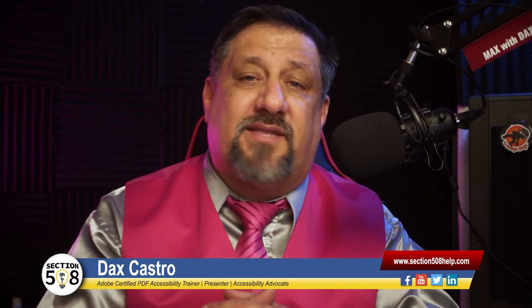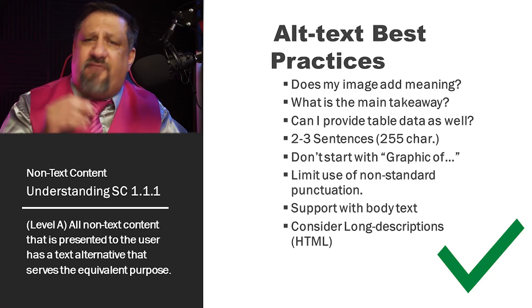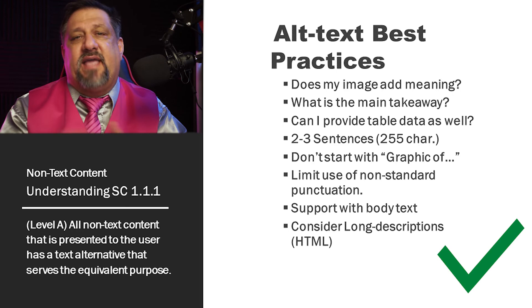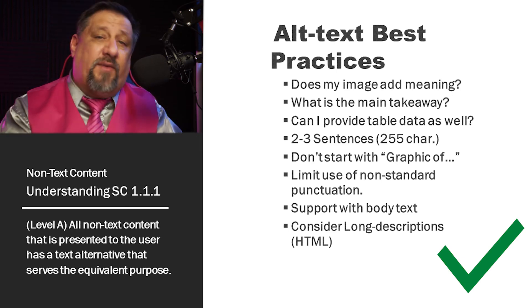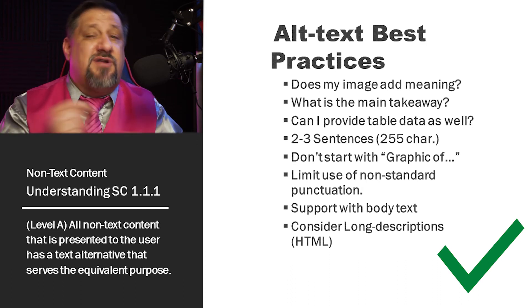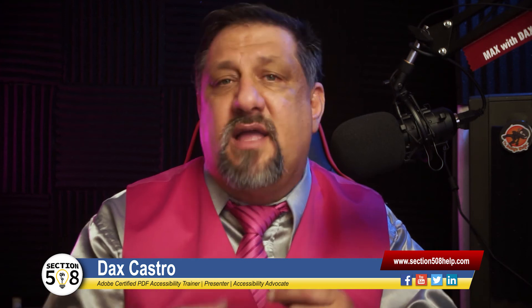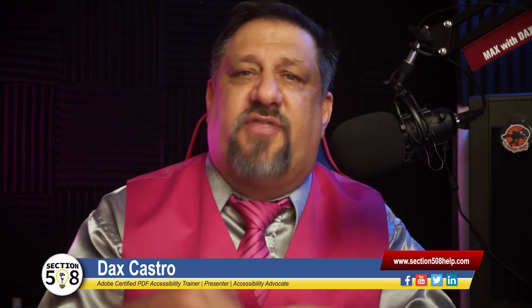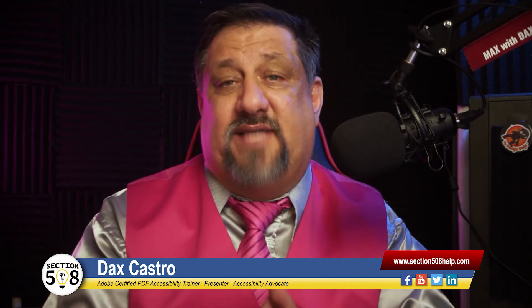Sometimes the best way to represent charts and graphs is with a table. People with cognitive disabilities might digest that table a lot easier. If you need every one of those data points to be explained, then a table, if available, is a great option. Also, we do not want to start our alt text with the word 'graphic of' or 'picture of.' Of course, if it's a pie chart or infographic where it's important that the user understands how that information is being presented, then you would obviously start your alt text there.